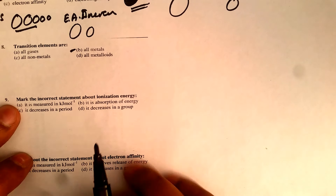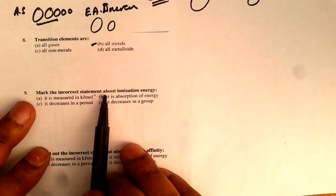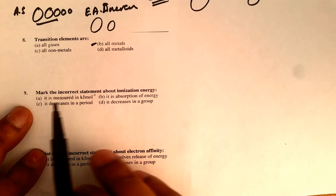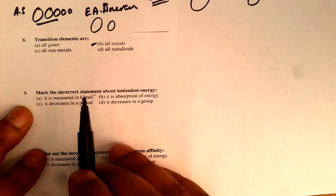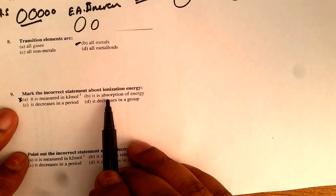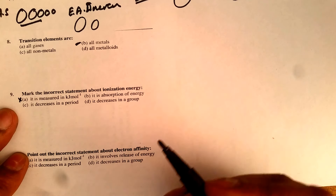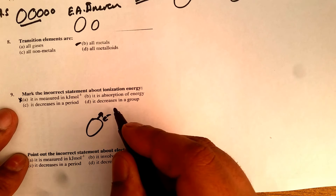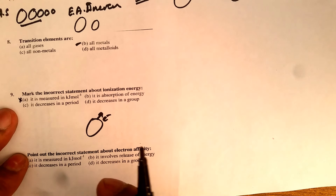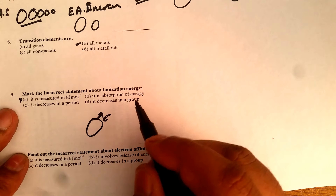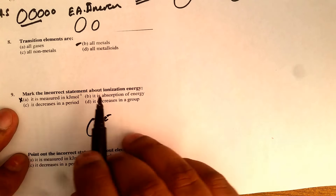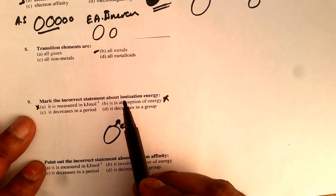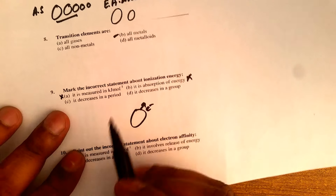MCQ 9 asks: mark the incorrect statement about ionization energy. Option one says it is measured in kilojoule per mole — this is a correct statement, so that is not the answer. Another option says it involves absorption of energy when an electron comes out from an atom — this is also correct, so that is not the answer either.